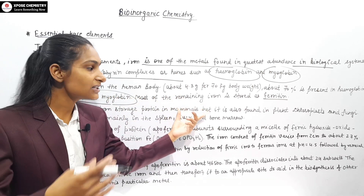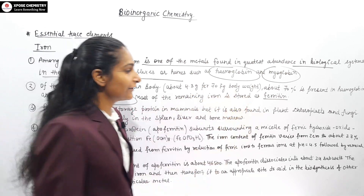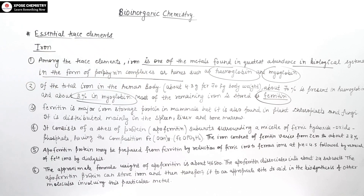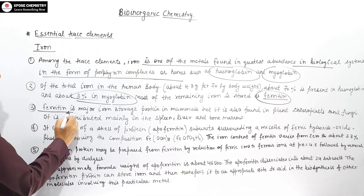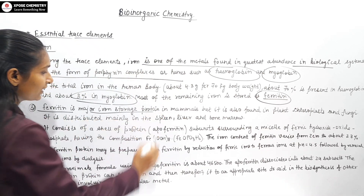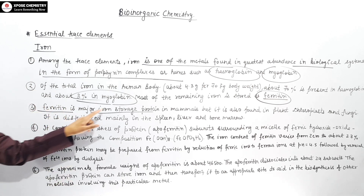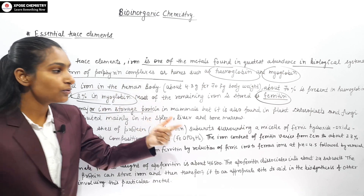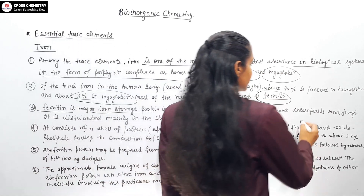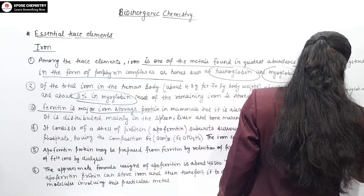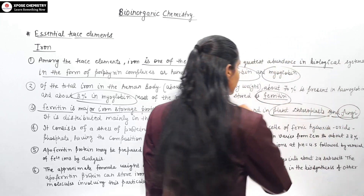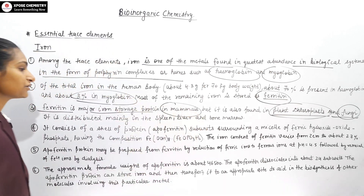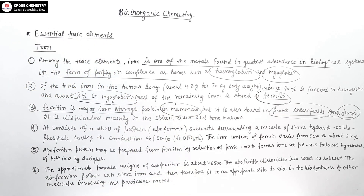Most of the remaining iron is stored as ferritin. Ferritin is our major iron storage protein in mammals. It can also be seen in plants, chloroplasts, and fungi.